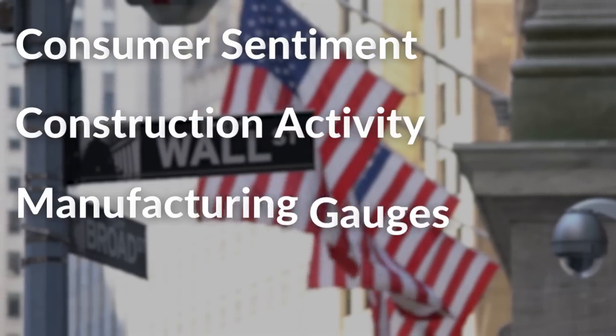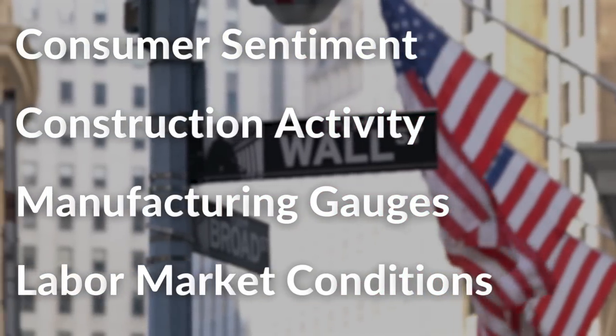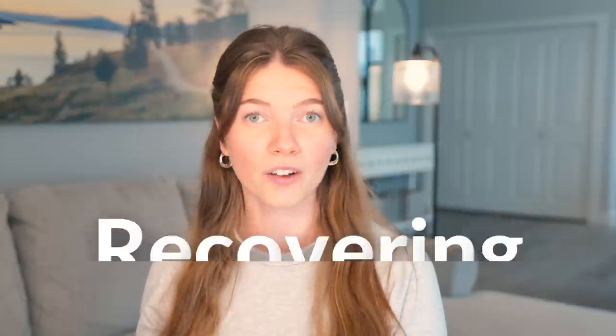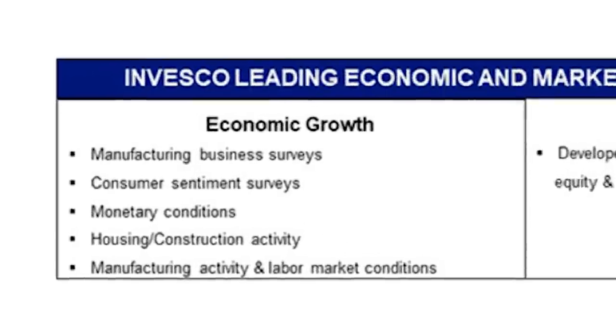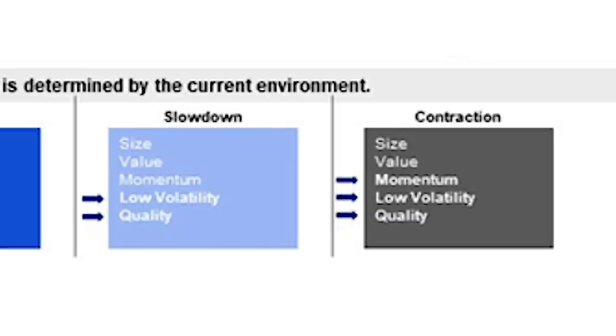Then the fund assesses the prevailing economic environment and market conditions. It looks at economic and market parameters such as consumer sentiment, construction activity, manufacturing gauges, and labor market conditions, in order to determine whether the economy is expanding, slowing, contracting, or recovering. This chart gives you a better understanding. During recovery and expansion, the fund targets companies' size and value, while during slowdown and contraction, the fund focuses on stocks with healthier balance sheets and reduced susceptibility to market swings.